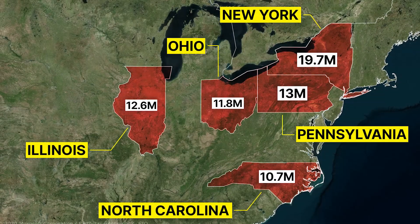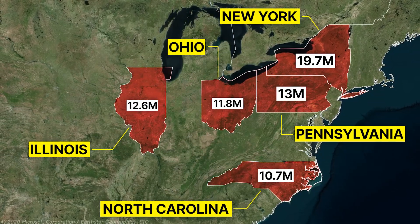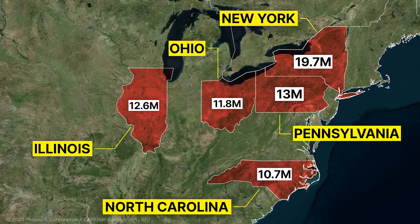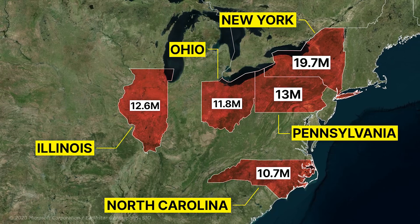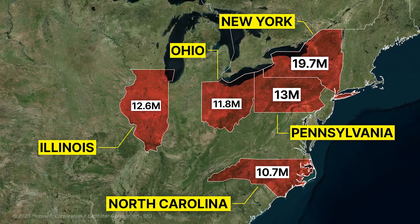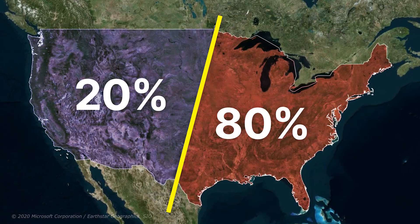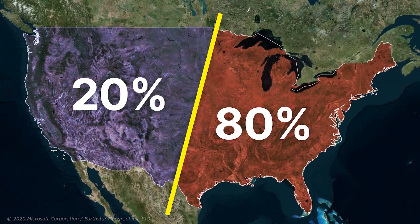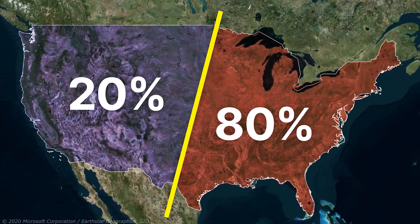First, we go to the east of the United States, which is home to the least of the 9 most populous states. The 5 states of New York, Pennsylvania, Ohio, Illinois, and North Carolina, which shows that the majority of the population of the United States lives not only in these 5 states but also in the east of the country. According to statistics, 80% of the population of the United States is located in the eastern belt.